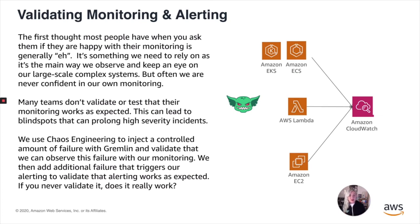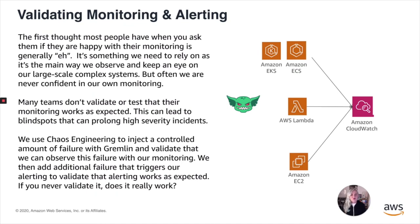Many teams don't validate or test that their monitoring works as expected. That's a really great way to make sure you don't encounter failures that could have been prevented by doing some chaos engineering work proactively. If you don't validate it, this can actually lead to blind spots that can prolong high severity incidents. You won't even know that an incident is occurring for hours, perhaps days — sometimes even years at worst. We want to make sure our monitoring is working as we want it to, so we'll use chaos engineering to inject a controlled amount of failure with Gremlin and validate that we can actually observe this failure with our monitoring.